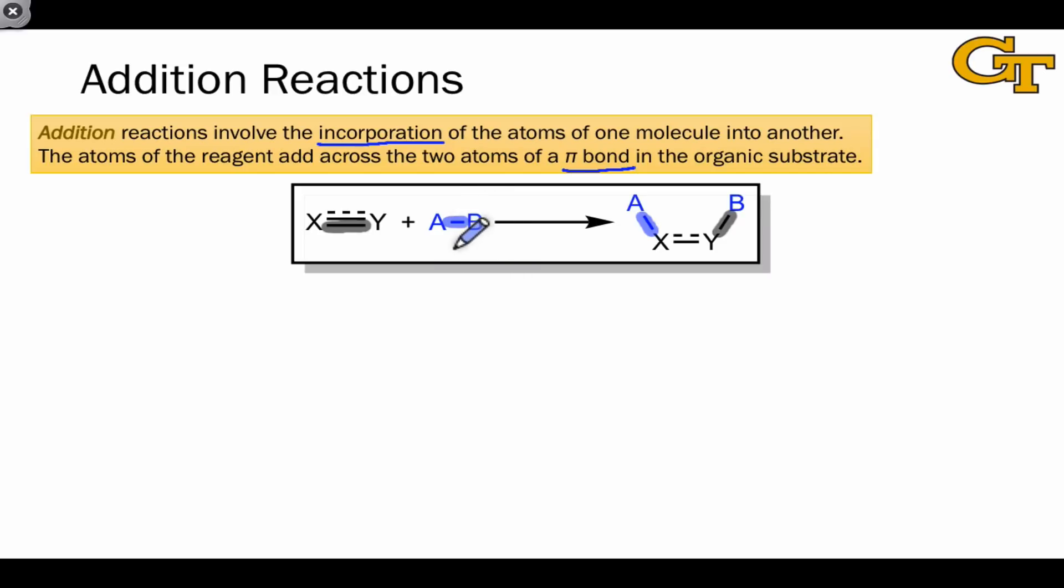A and B may not be covalently linked like this. In fact, this is extremely common. We might actually be dealing with a reagent that's more like A- and B+, an ionic compound. But nonetheless, this is still referred to as addition, since the elements of A and B, the atoms that make up A and B, are incorporated into the final product.